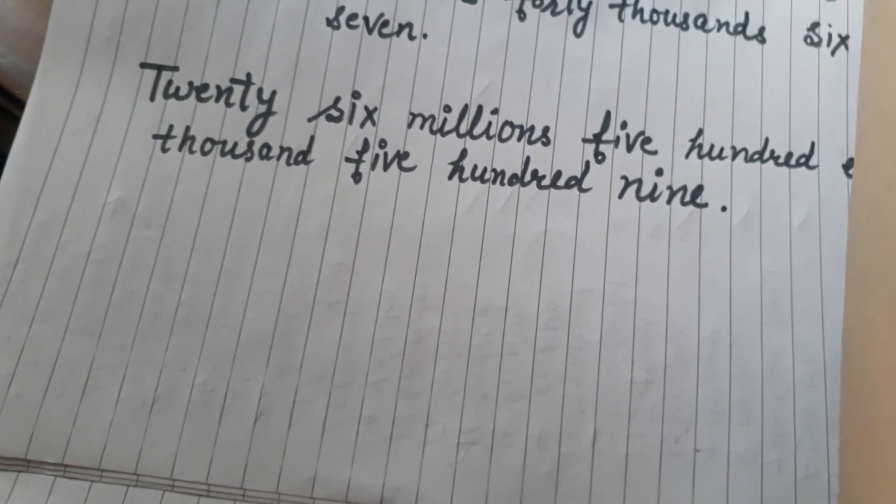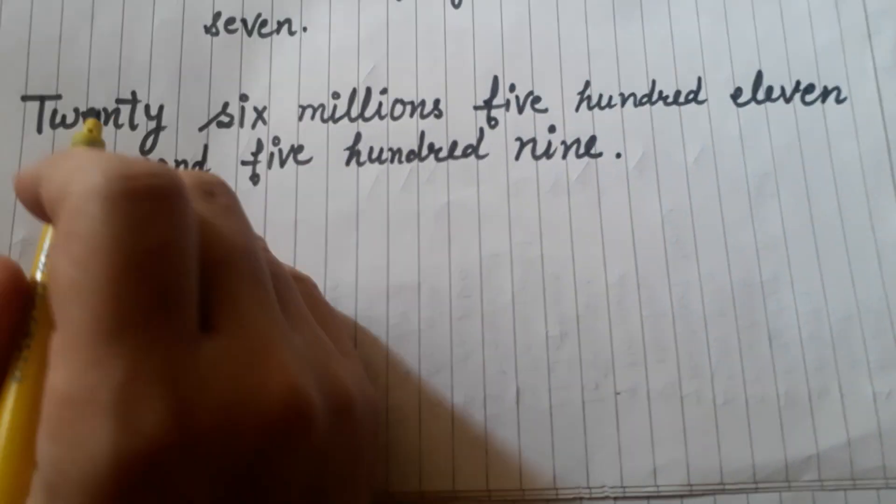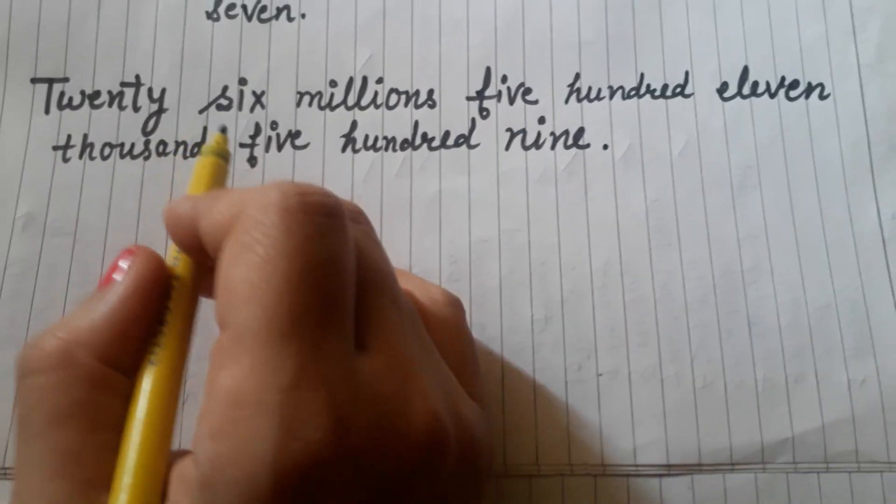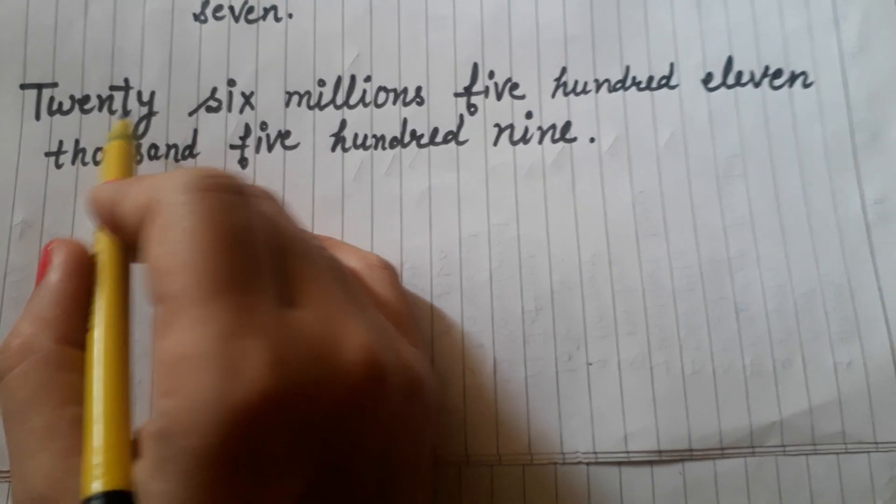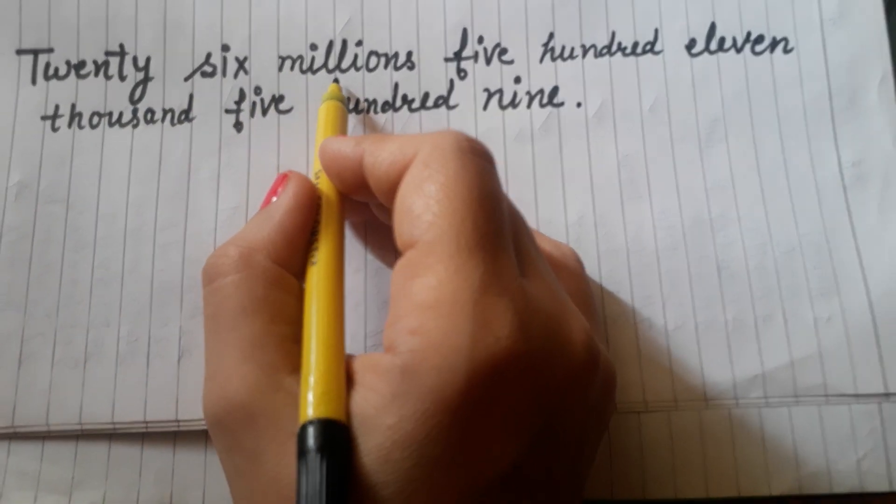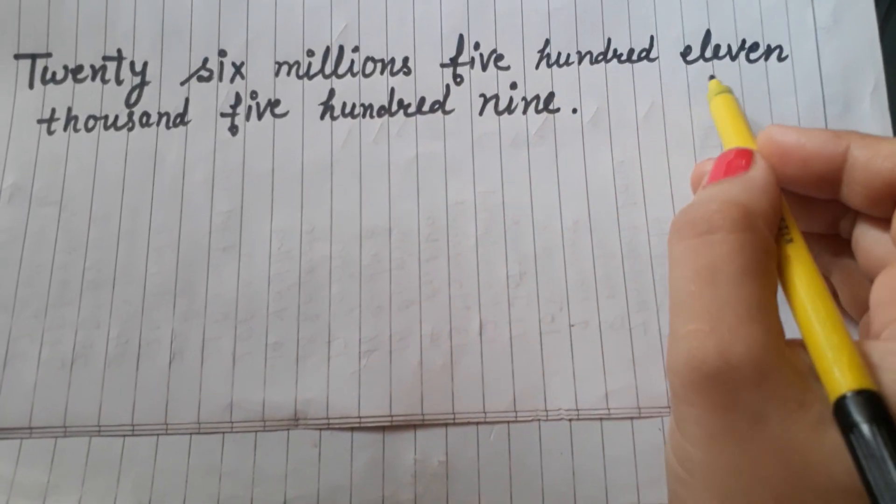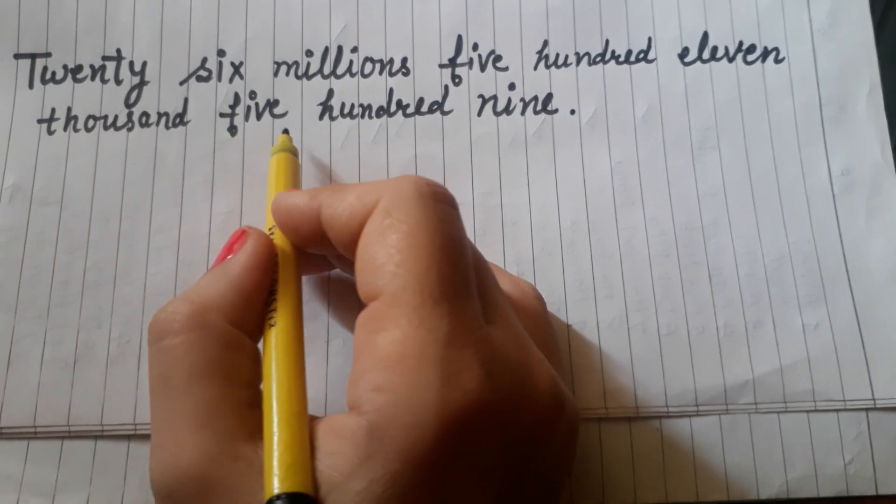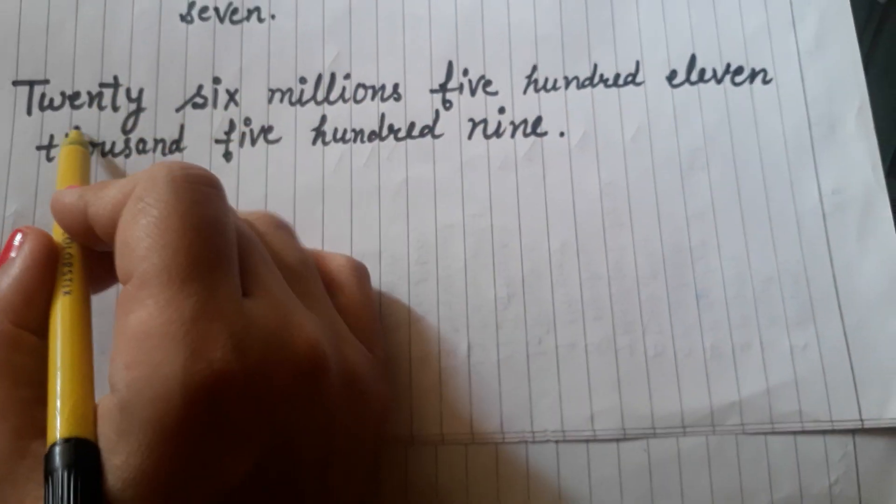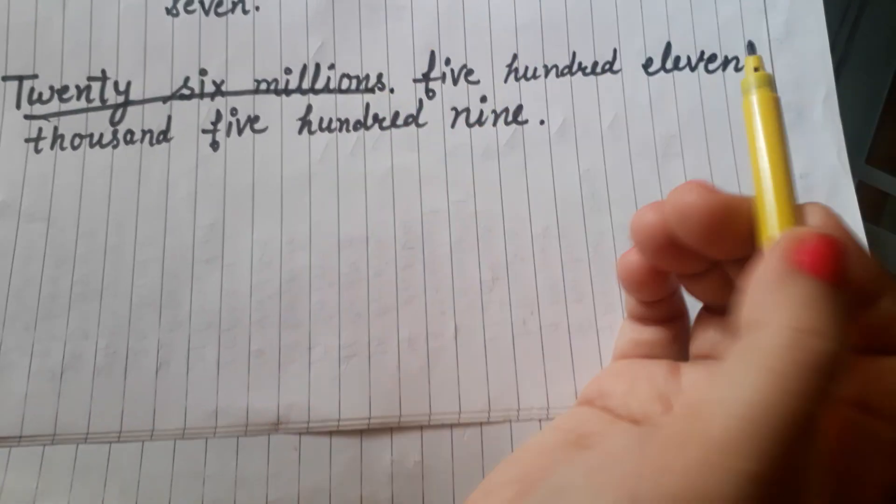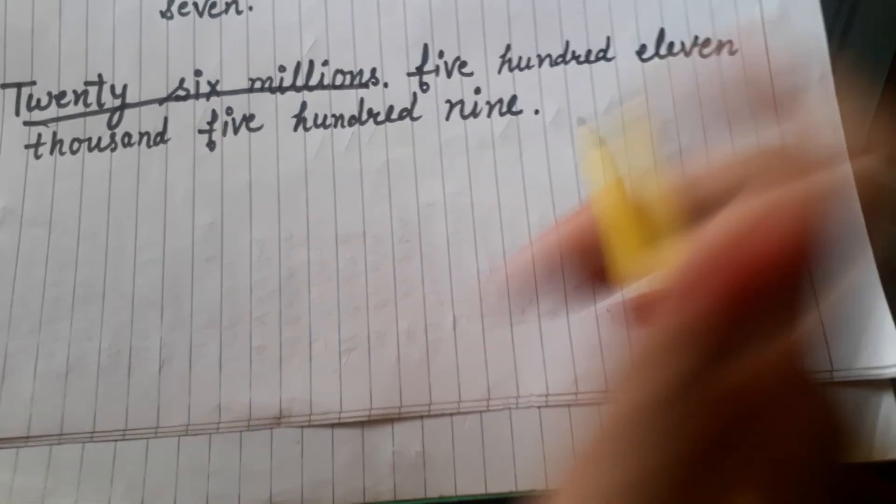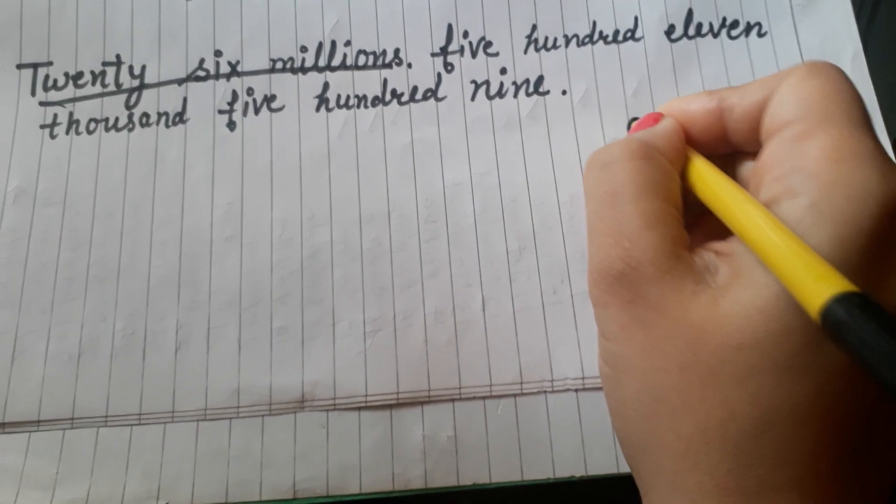Let's take the next example. Now we will write this in number form: twenty-six million, five hundred eleven thousand, five hundred nine. First is 26 million. Let's start with ones,